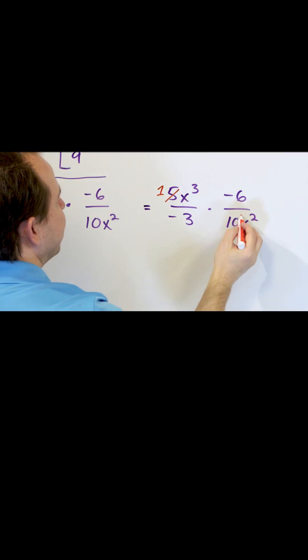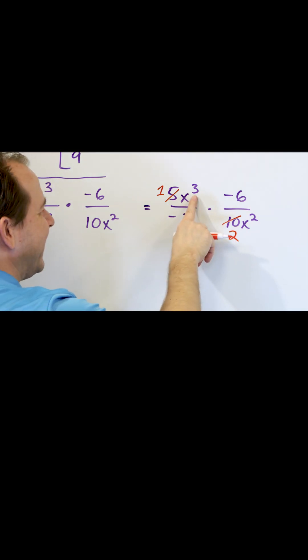5 divided by 5 is 1. 10 divided by 5 is 2. But then I also have x cubed and I have an x squared.